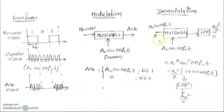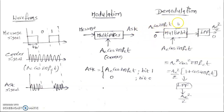After receiving ac·cos(2πfc·t) or 0, the receiver must decode the actual message information. In demodulation, the circuit multiplies the received signal with ac·cos(2πfc·t) again and passes it through a low pass filter. If message bit 1 was transmitted, the receiver multiplies ac·cos(2πfc·t) by ac·cos(2πfc·t), giving ac²·cos²(2πfc·t). Using the identity cos²θ = (1 + cos2θ)/2, this becomes (1 + cos(4πfc·t))/2.